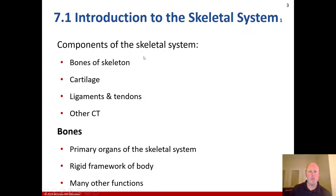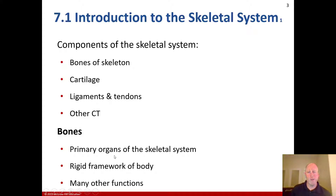Starting with the components of the skeletal system, we have the bones of the skeleton, cartilage, ligaments and tendons, and other connective tissue. Bones are the primary organs of the skeletal system and are the rigid framework of the body. They provide stability and support, but they have many other functions too.